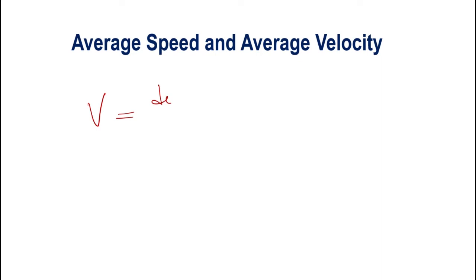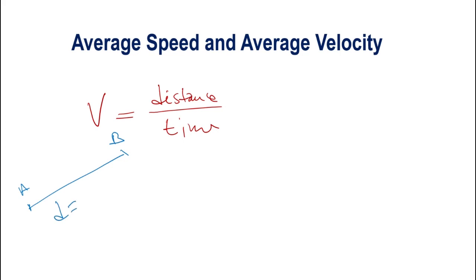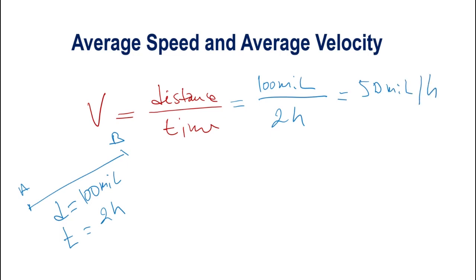Average speed is the distance traveled over the time it took to travel that distance, given by V = distance over time. For example, if we traveled 100 miles from point A to point B and it took two hours, the average speed is 100 miles divided by 2 hours, which equals 50 miles per hour. By definition, speed is always positive — it is the magnitude of distance over time.